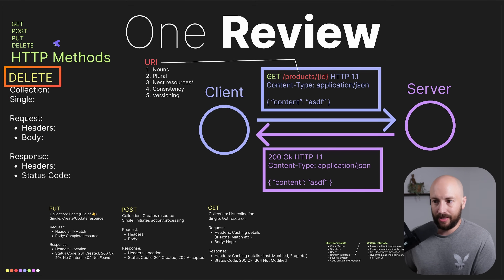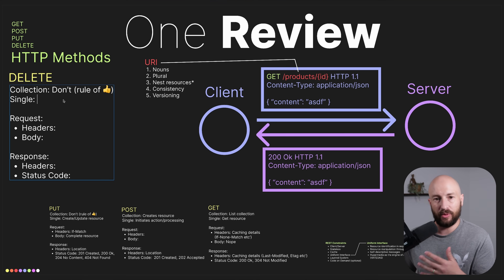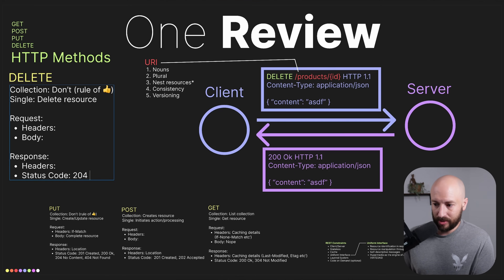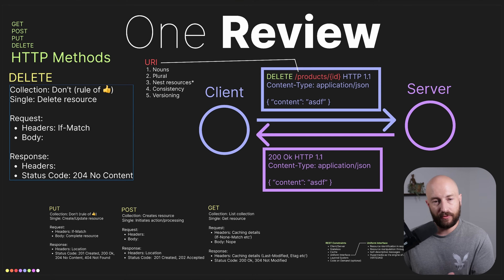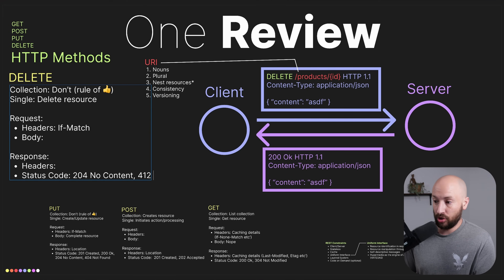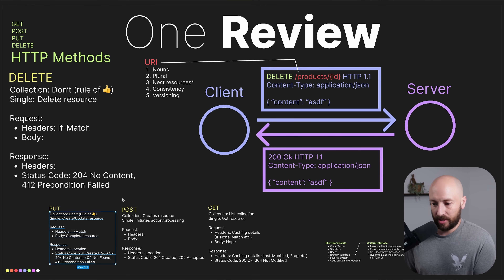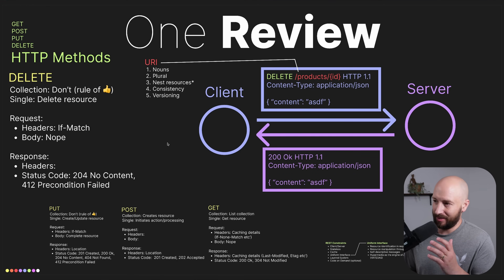Last but not least, we have HTTP DELETE. For a collection, as a rule of thumb, you won't want to do this — do your own research if you need to implement something like that. For a single item, when we call DELETE on a specific ID, we want this to delete the resource. If the deletion was successful, return 204 No Content. Similarly, we can specify if-match with a specific ETag, and if we match the ETag, it will delete that resource. If we don't match the ETag, we return 412 Precondition Failed — which also applies to PUT when doing a conditional operation. Similar to HTTP GET, we won't want a body when using HTTP DELETE.